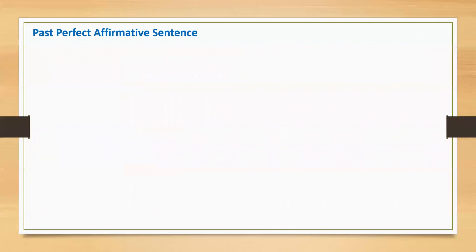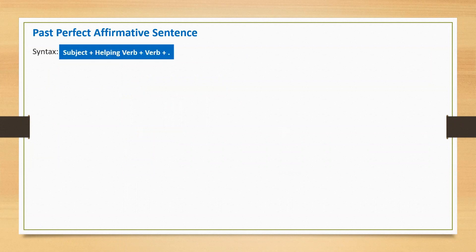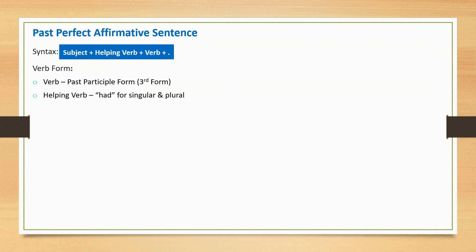Past perfect affirmative sentence — a positive statement or generic sentence. Let's understand the rule or syntax. The sentence starts with subject, followed by helping verb, main verb, and a full stop at the end. The past participle form of the main verb is used, and the helping verb 'had' is applicable for both singular and plural.